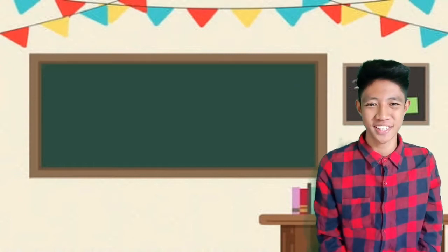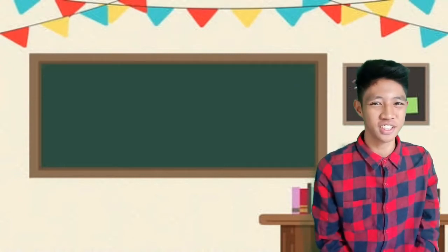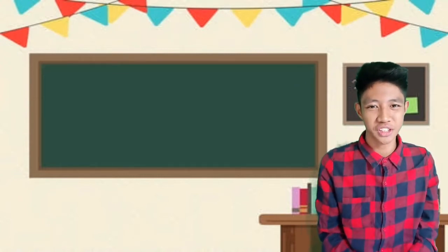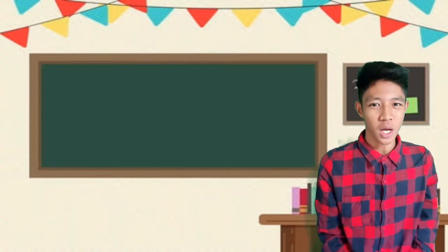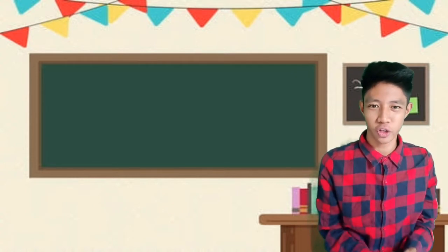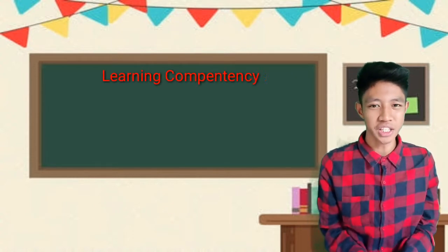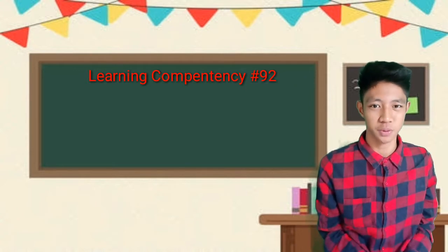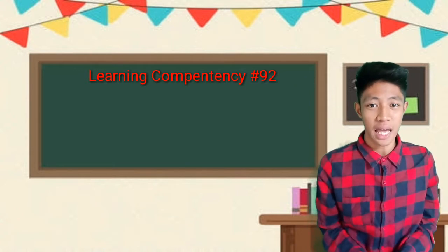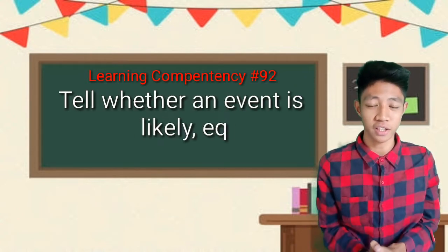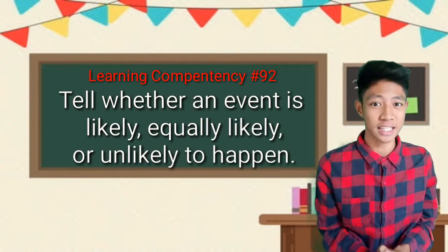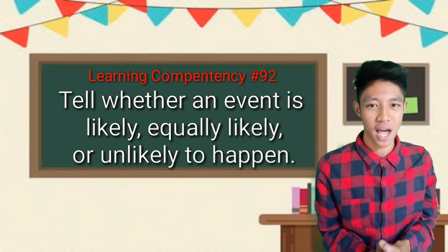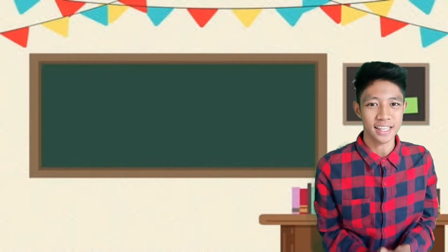Hi everyone! Good to see you again for another video lesson. I'm your teacher, Aldrin Taostra, and for today we will talk about Learning Competency No. 92 of Math Grade 2, which is to tell whether an event is likely to happen, equally likely, or unlikely to happen. Let's start!